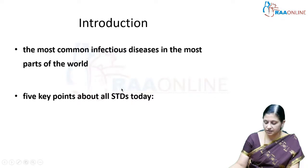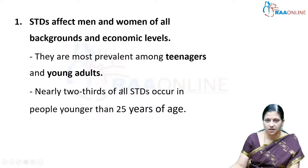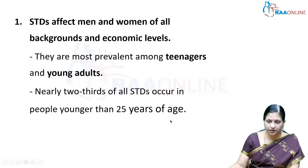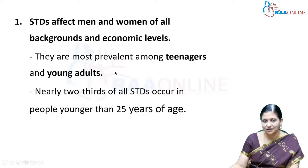Sexually transmitted infections are among the most common infectious diseases in most parts of the world. STIs affect men and women of all backgrounds and economic levels, and they occur most frequently in people younger than 25 years of age, with high prevalence among teenagers and young adults.